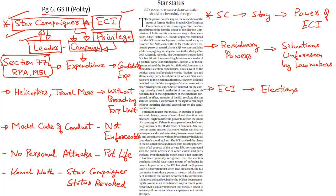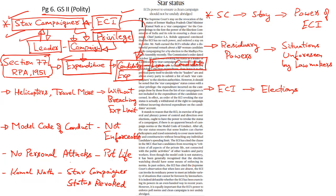Under Section 77 of the Representation of People Act of 1951, expenditure related to election campaigning has been covered and it also allows the Election Commission of India to lay down expenditure limits for each candidate in a particular constituency. This expenditure limit is quite low and is only sufficient for the candidate to meet his electoral expenses. The Election Commission has prescribed separate expenditure limits for Assembly Elections and Lok Sabha Elections, and this limit varies from state to state.